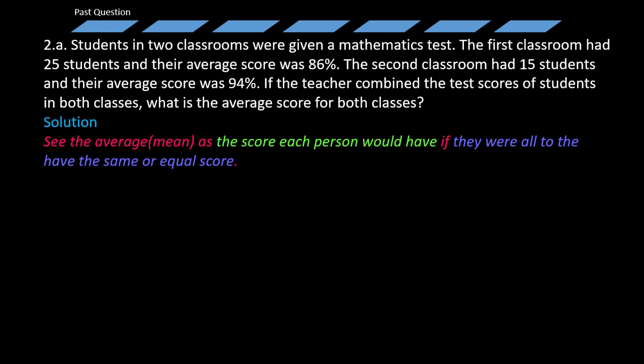Thus, if I happen to be given the mean of six for this number of students we talked about - the 20 students - I can quickly also get back the total for all the students by multiplying the 6 by 20, since the mean actually means a score each person would have if they were all to have the same score. So this is what we are basically going to apply in this particular question.